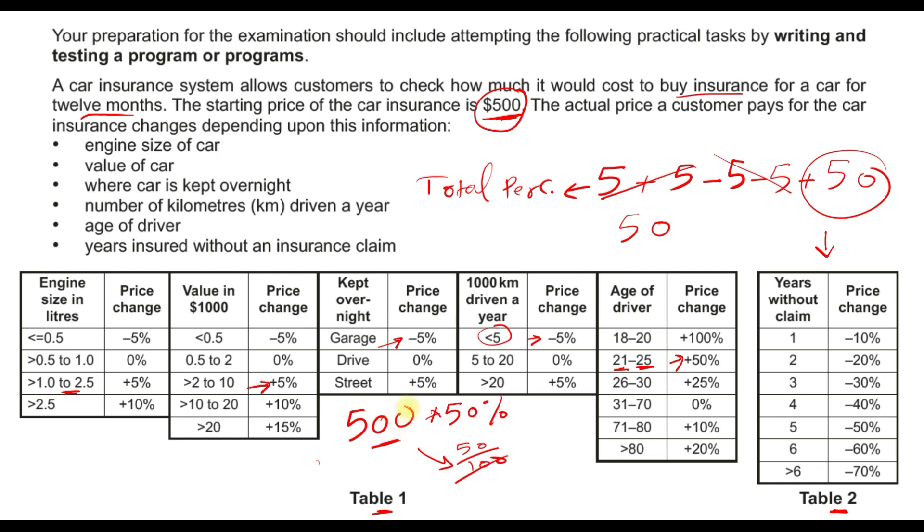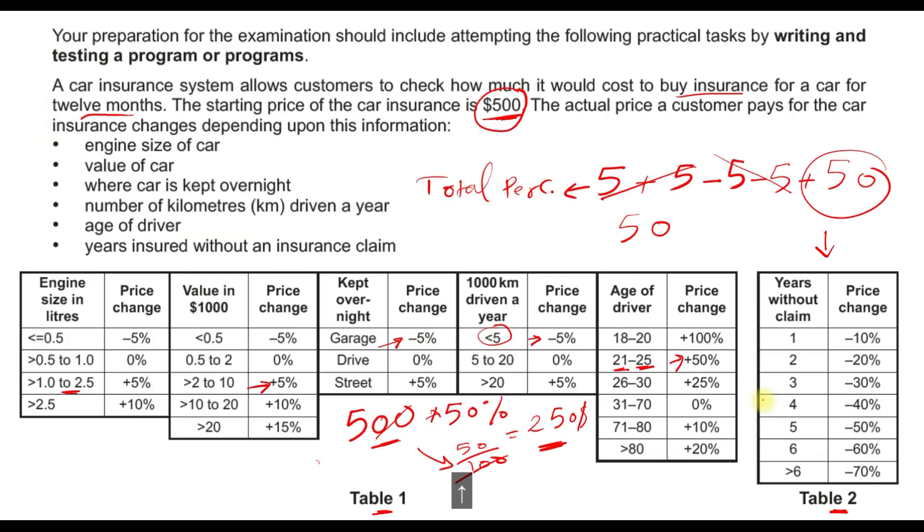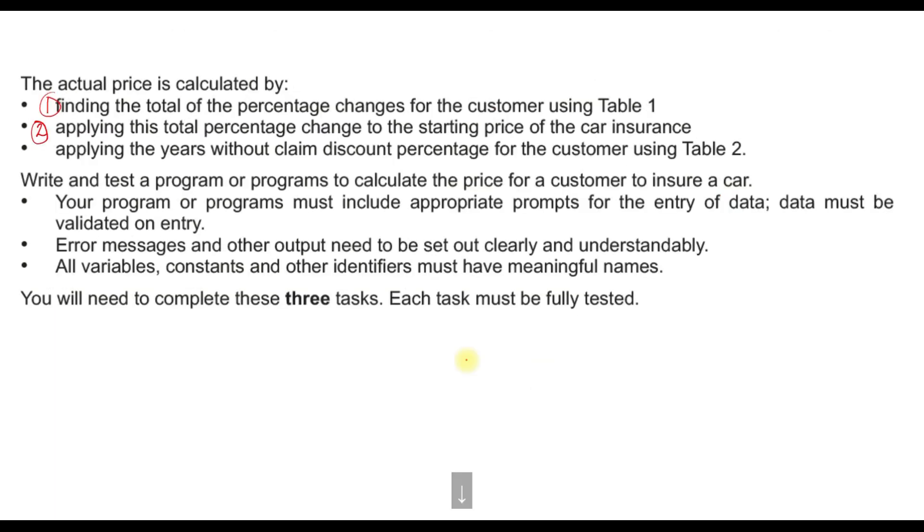This is going to be $250, right? So the insurance price will be $250. It could be more than this or less than this depending on the criteria or inputs given in Table 1. Point number 3: we are talking about applying the years without claim discount percentage for the customer using Table 2. So if there's no claim, we will apply -10% to this value. If it's 2 years without a claim, we will apply -20%, and so on and so forth, until more than 6 years where we apply a maximum of -70%.